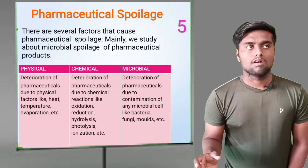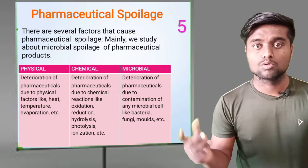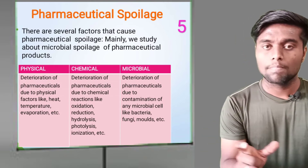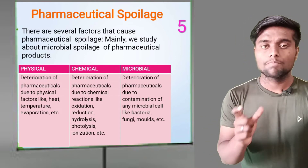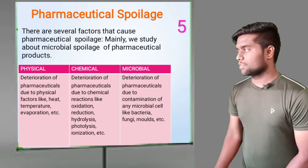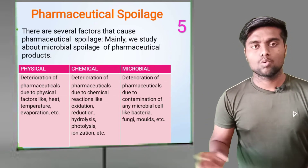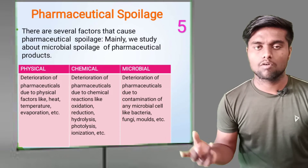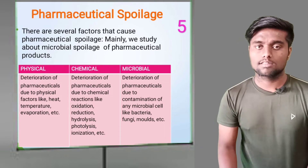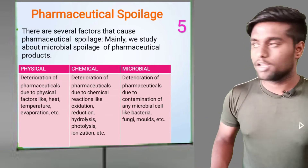If we mix one solution with another, it can spoilage the product. For example, if we add a base into an acid, then the reaction will be neutralized, and after that there will be damage to the product. So, through chemical reactions, pharmaceutical products spoil.